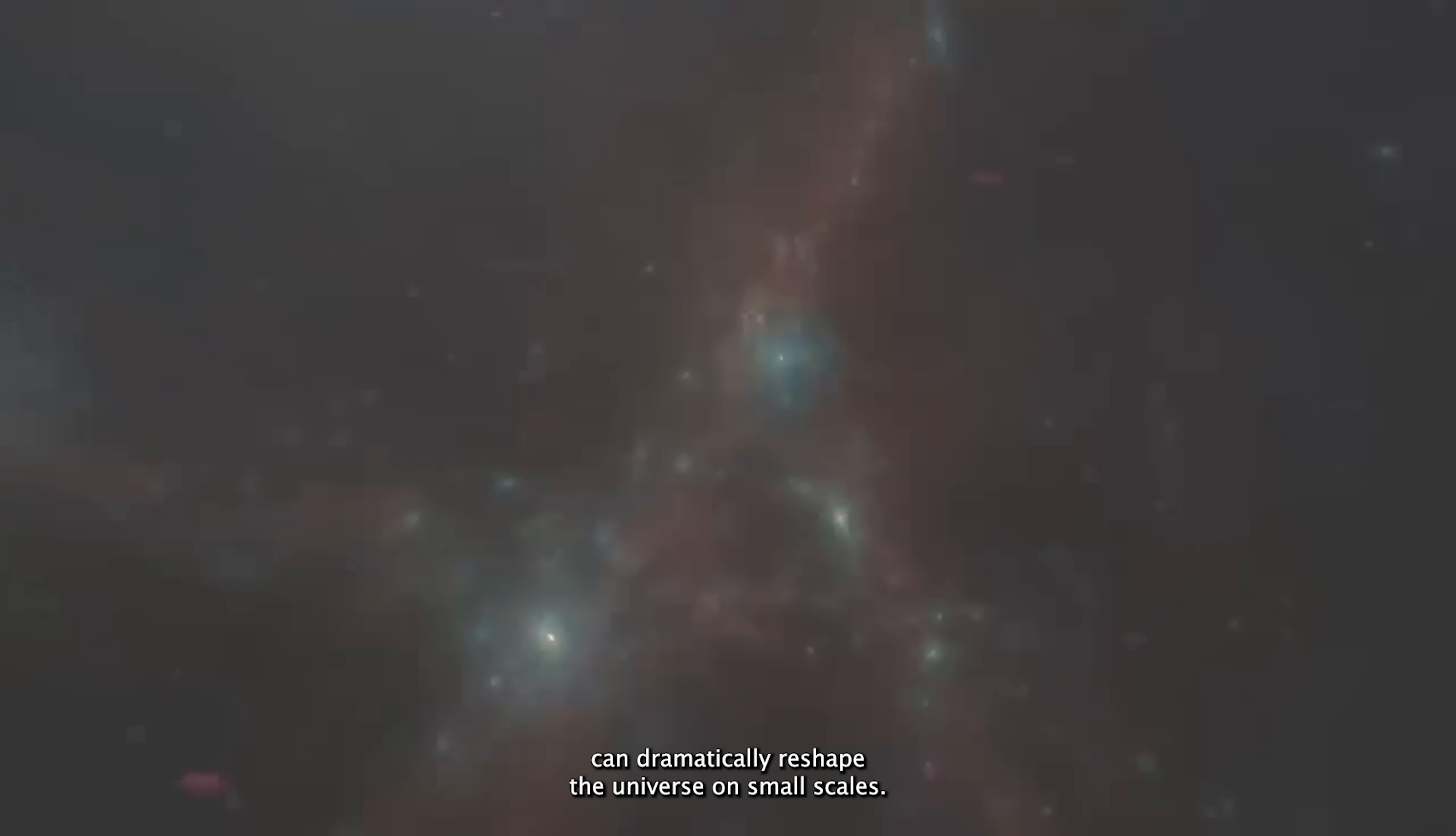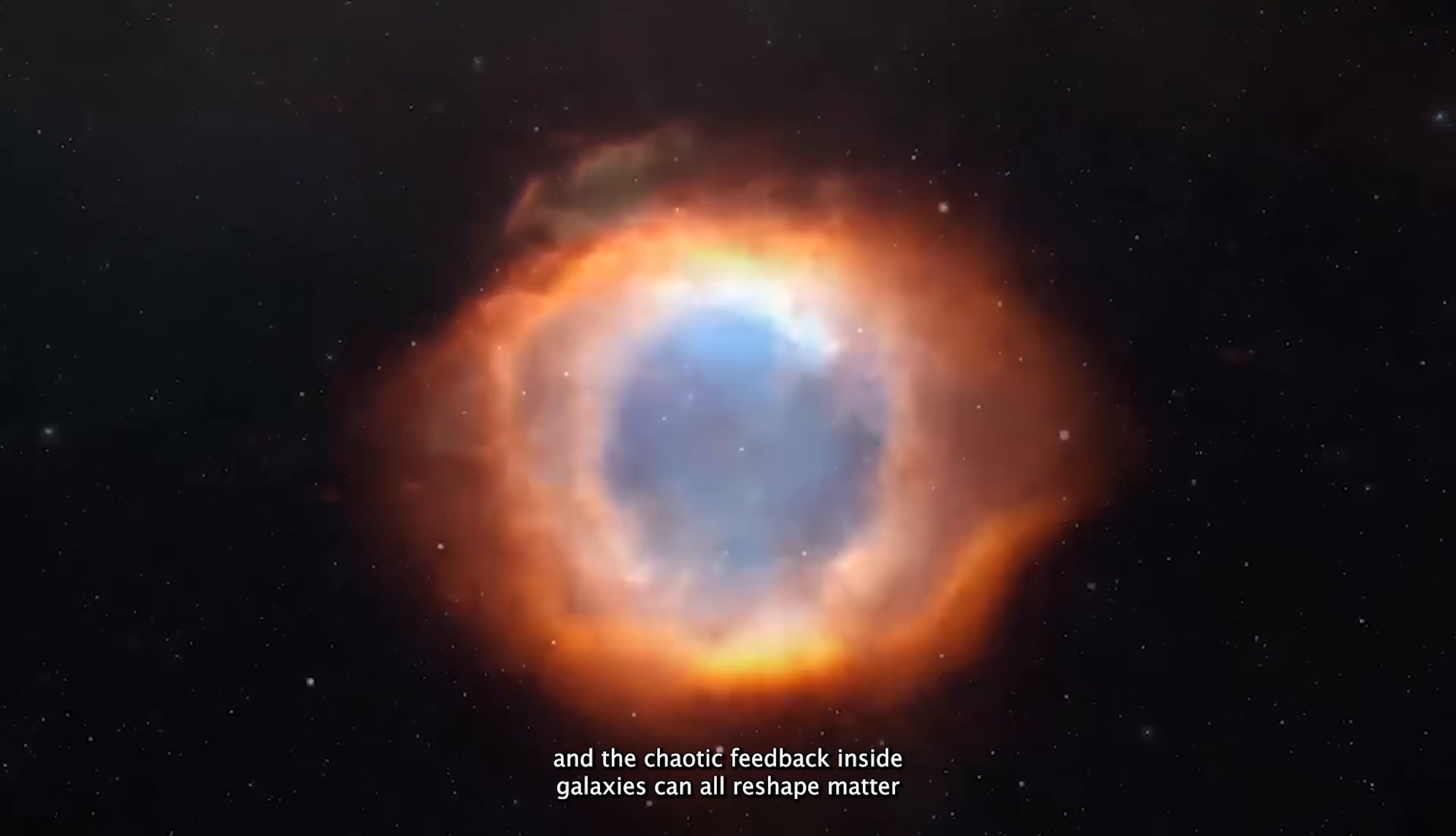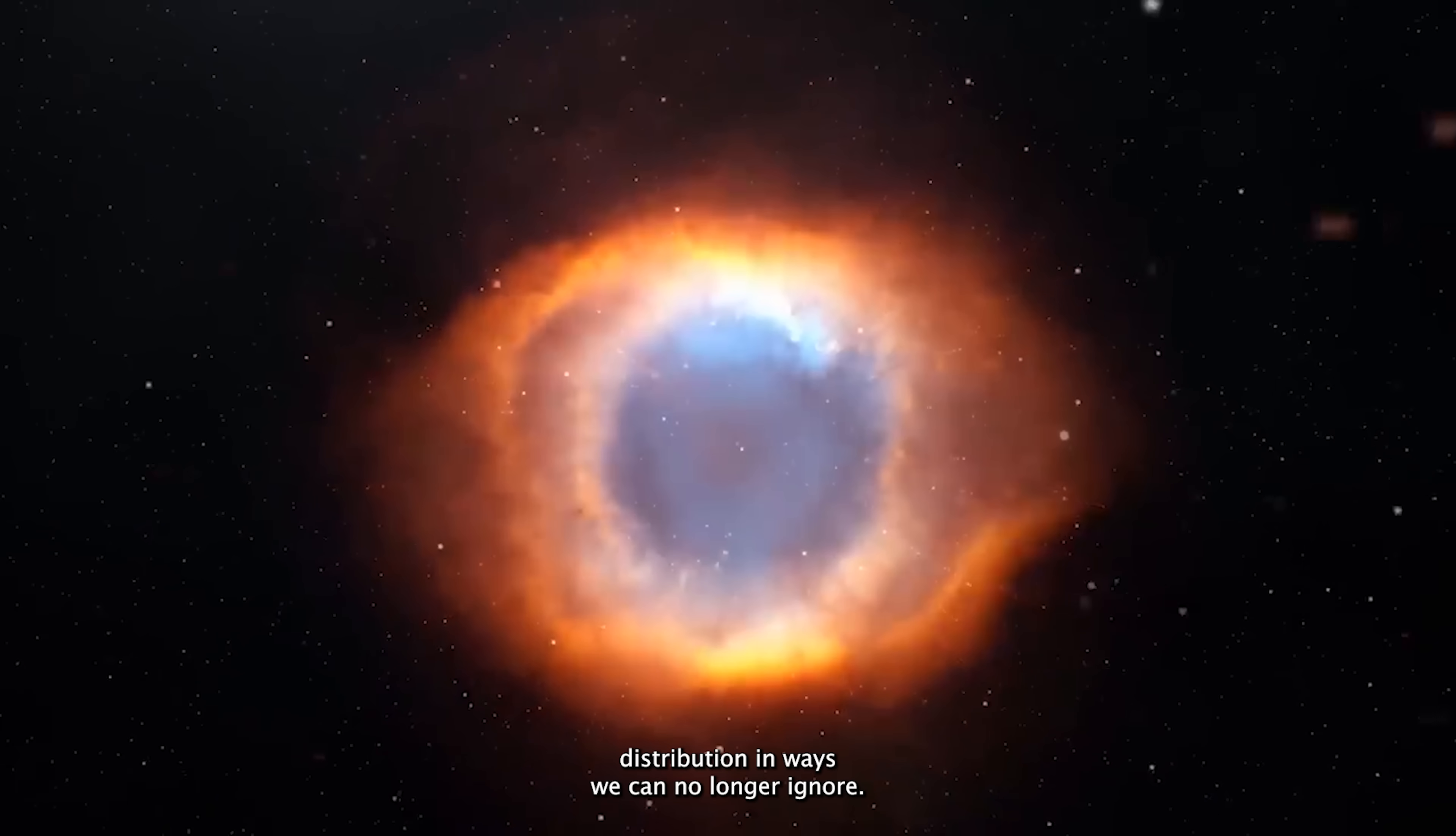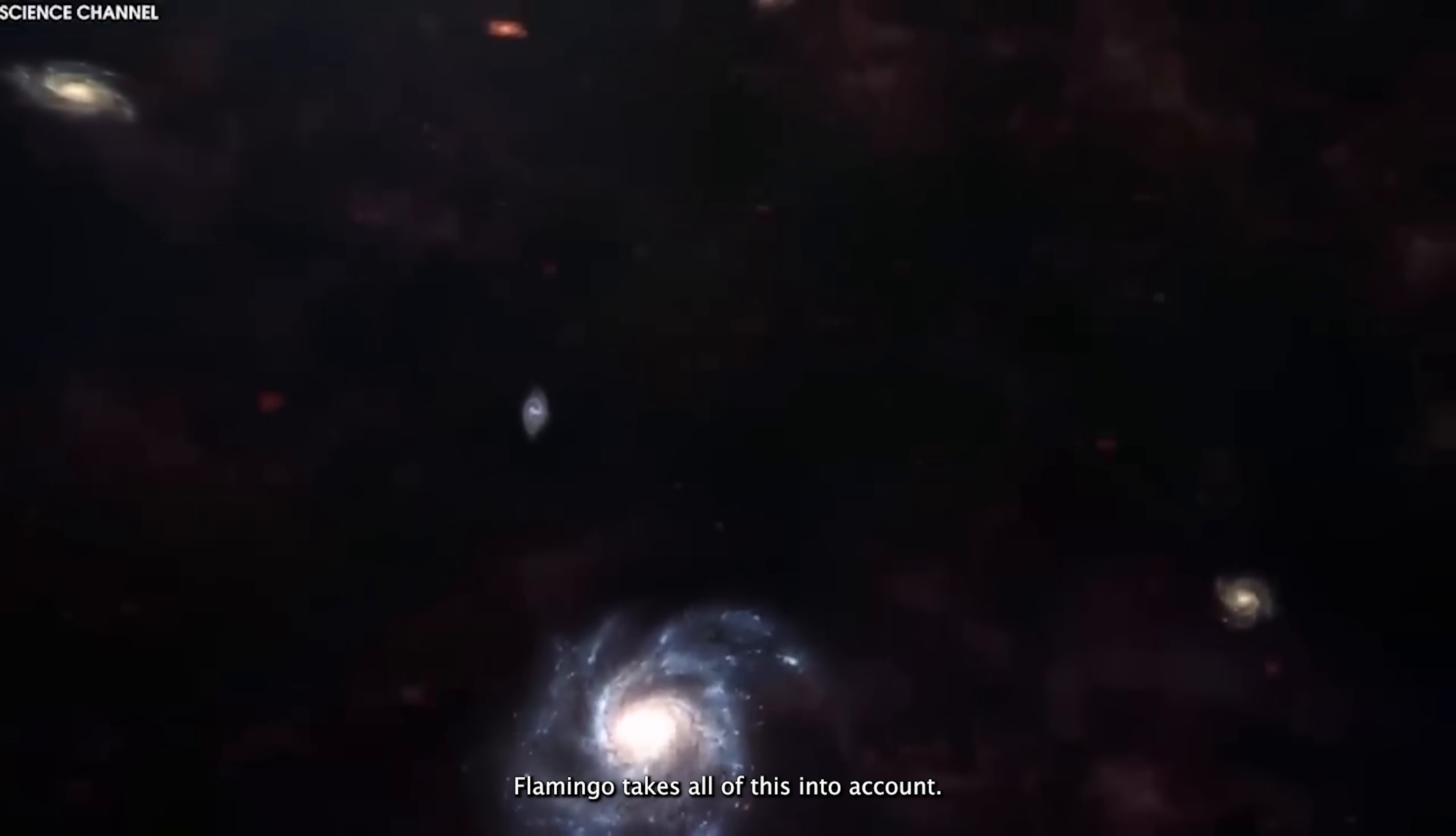But baryons, despite being only about one fifth of the total mass, can dramatically reshape the universe on small scales. Winds launched by supermassive black holes, explosive supernovas, and the chaotic feedback inside galaxies can all reshape matter distribution in ways we can no longer ignore. Flamingo takes all of this into account.